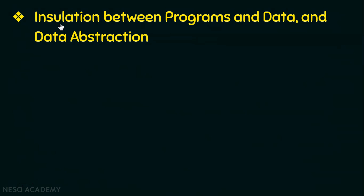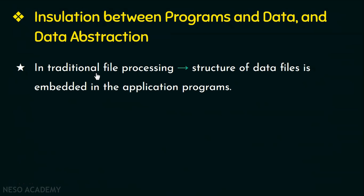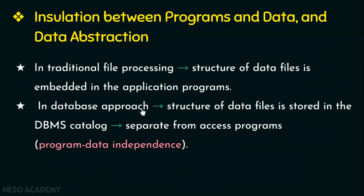The next characteristic of DBMS is insulation between programs and data, and data abstraction. In traditional file processing, the structure of data files is embedded in the application programs themselves — that is, the structure is within the program and not separate. So if there is any change to the structure of data files, it is going to affect the programs and we also need to change the application program. Whereas in the database approach, the structure of data files is stored in the DBMS catalog and is separate from the access programs. So if there is any change to the structure, it does not affect the programs. And that is called program-data independence.